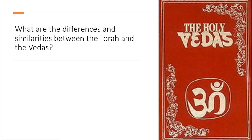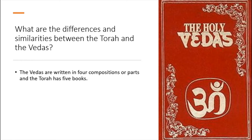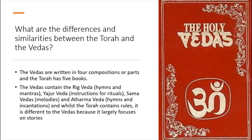What are the differences and similarities between the Torah and the Vedas? The Hindu Vedas are written in four compositions and the Torah has five books, so they are both written in sections. However, whilst the Vedas contain the Rig Veda, Yajur, Sama and Atharva, the Torah largely focuses on stories, whereas the Vedas have lots of different themes. They do have rules in common.